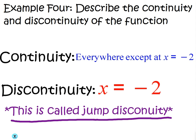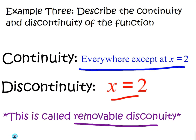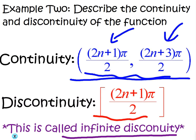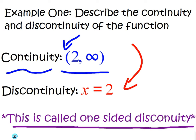Okay, so just to refresh your four types of discontinuity: jump, removable, infinite, and one-sided, basically an endpoint.